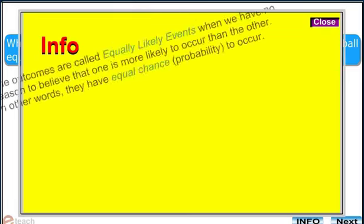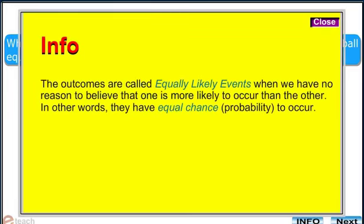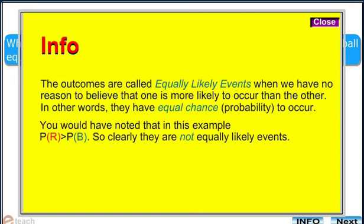Note that the outcomes are called equally likely events when we have no reason to believe that one is more likely to occur than the other. In other words, they have equal chance (probability) to occur. You would have noted that in this example, P(R) > P(B). So clearly they are not equally likely events.